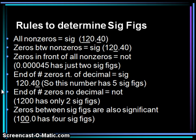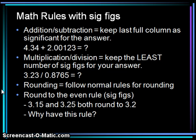If we have end-of-number zeros but there is no decimal shown, those are not considered significant — the number 1,200 as written has only two significant figures. Finally, zeros between significant figures are also significant: in 100.0, the final zero is significant because it comes to the right of the decimal, and the zeros in between are significant because they fall between the 1 and the significant zero after the decimal.